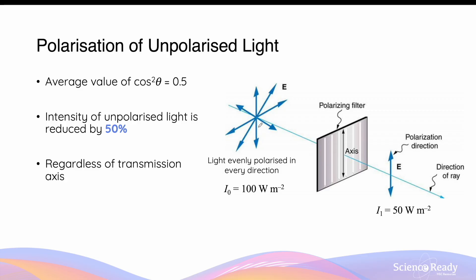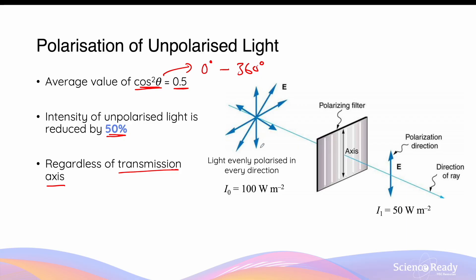Unpolarised light can be thought of as light consisting of polarising axes evenly distributed in all directions. Since the average value of cos squared theta, where theta can range from 0 degrees to 360 degrees, is 0.5, the intensity of unpolarised light is always reduced by 50% — that is, it's always halved after it passes through a polariser. This applies to all polarisers regardless of the transmission axis.